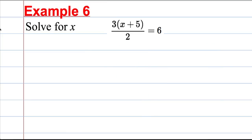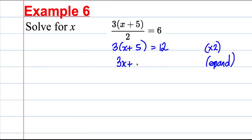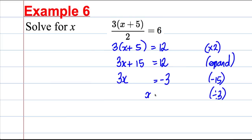Example 6: 3 times (X + 5) all over 2 equals 6. Remove the denominator by multiplying both sides by 2: 3(X + 5) = 12. Expand the bracket: 3X + 15 = 12. Subtract 15 from both sides: 3X = −3. Divide by 3: X = −1. Check: −1 + 5 = 4, times 3 = 12, divided by 2 = 6. Correct.